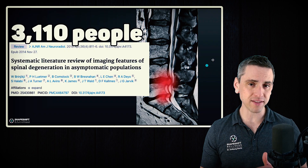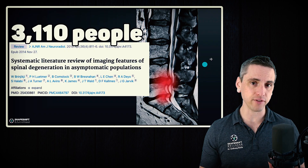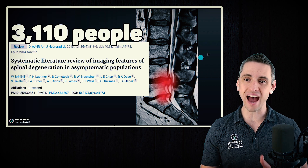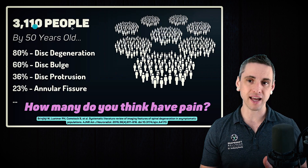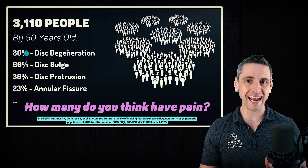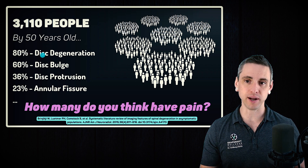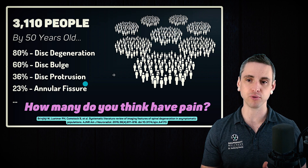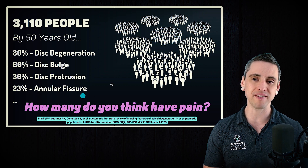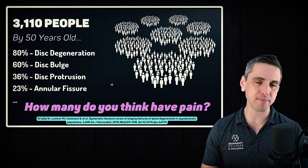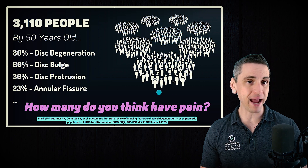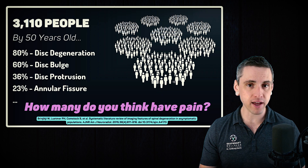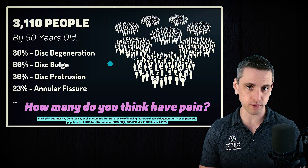To thoroughly get the structure idea out of your head, let's look at a study that looked at 3,000 people — a giant systematic review. What they found was that by 50 years old, 80% of people will have disc degeneration, 60% will have a disc bulge, 36% will have a disc protrusion, 23% will have an annular fissure, and many other things as well. How many of these people do you think had pain? Most of them, half of them, all of them, none of them?